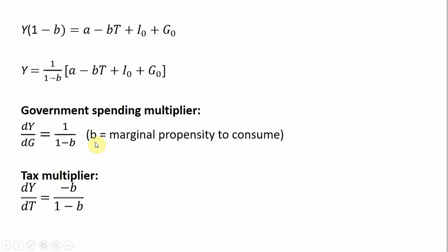B we'll recognize as the marginal propensity to consume. The tax multiplier is going to be the derivative of income with respect to T, lump sum taxes. The derivative of minus B times T is just minus B, but this minus B is being multiplied by what's in front of the bracket, and so that will simplify to our tax multiplier.